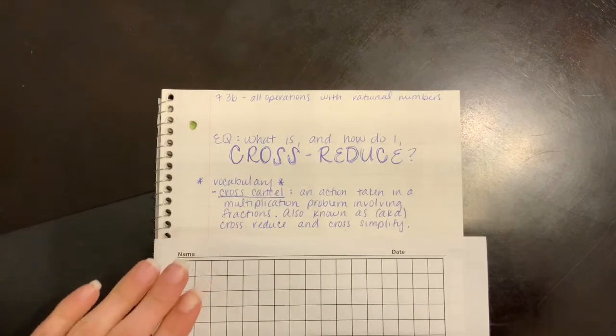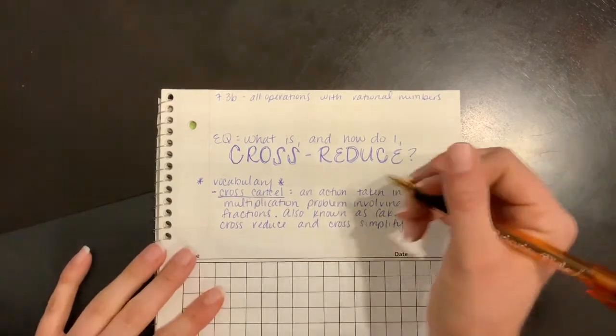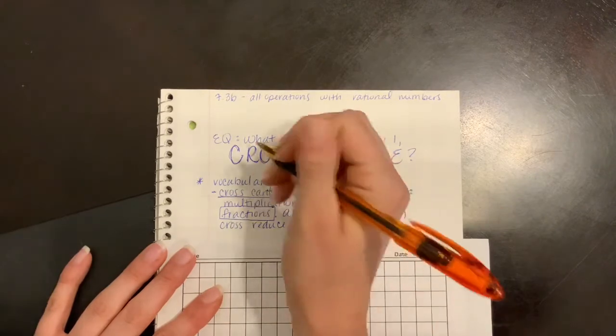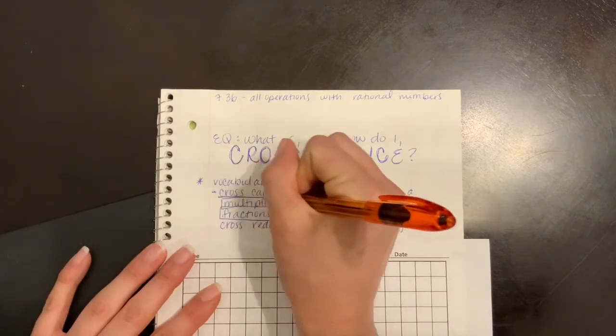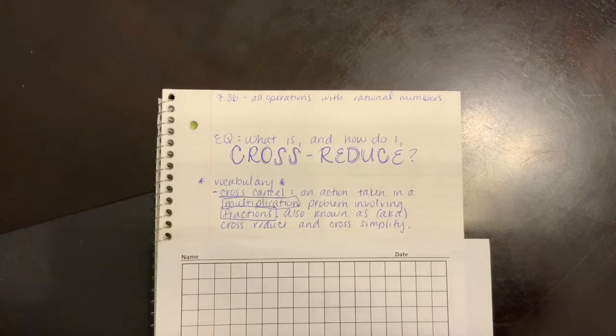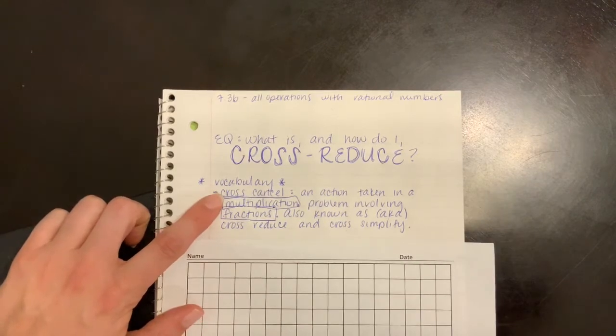The one thing I need you guys to be very aware of is that this is involving fractions, and it has to involve multiplication. Those are key words here. This cross-reducing trick doesn't work with any other problem. It has to be multiplication. I cannot stress that enough.